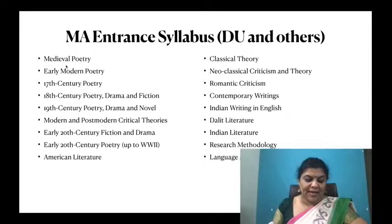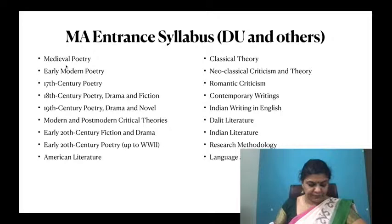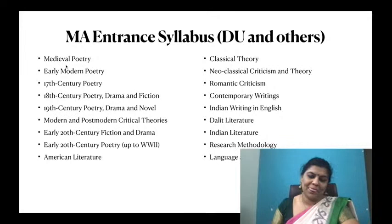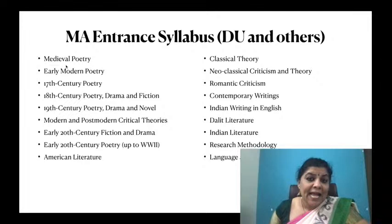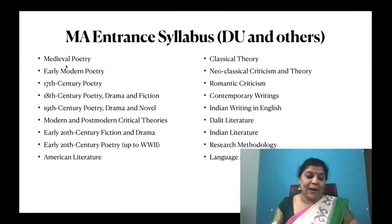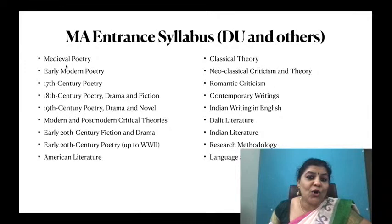Who wrote The Book of Philip Sparrow? It is by John Skelton. Another major medieval poem is The Ship of Fools — it is a well-known work by Alexander Barclay. Who so list to hunt? The poet is talking about hunting a hind or deer. It is a poem by Thomas Wyatt, prescribed in many universities.